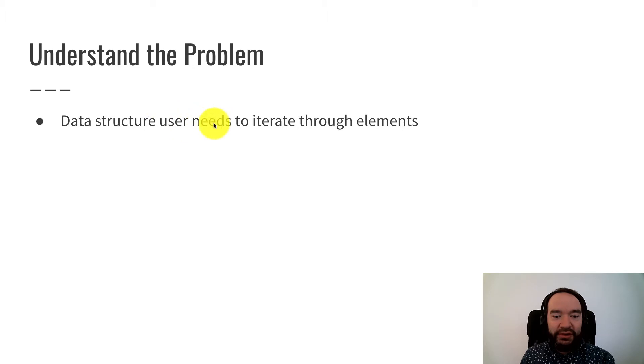A data structure user needs to be able to iterate through the elements. If I create an std array or an std pair or our dyad data structure, later on lists, vectors, and so on, we want to be able to loop through those elements. Write a for loop that goes through each element one at a time, visit them, do something.